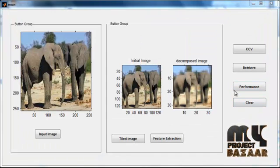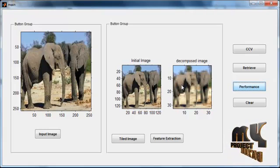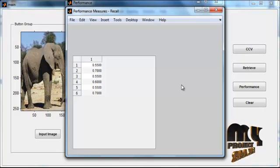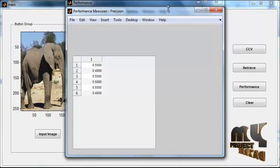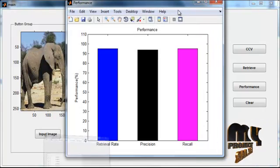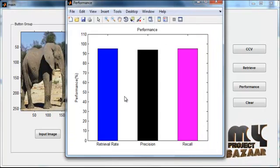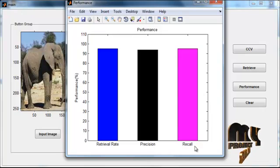Then click the button Performance. After clicking the button Performance, the performance value is plotted as a graph format. This is the bar chart which represents three things: the first one is retrieval rate, the second one is Precision, and the third one is Recall. These three performance metrics are plotted in bar chart format.